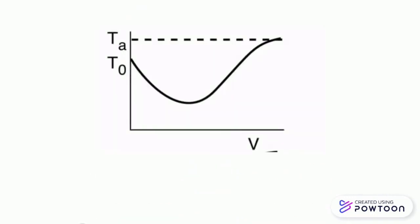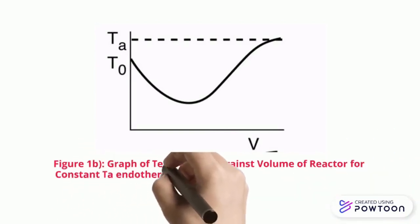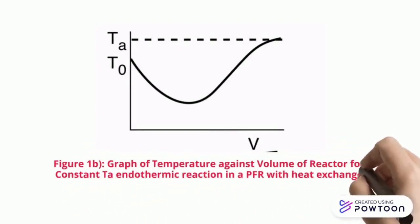Whereas Figure 1B shows the graph of temperature against volume of the reactor for constant TA, for endothermic reaction in a PFR with heat exchange.